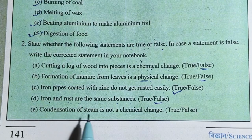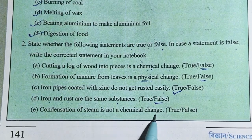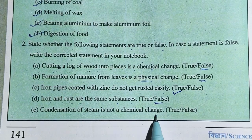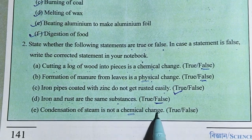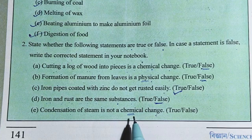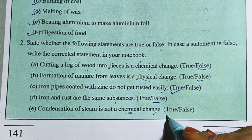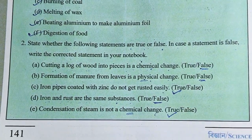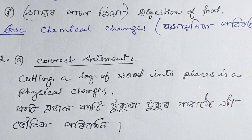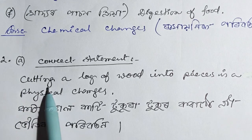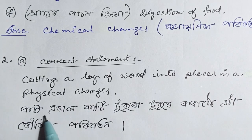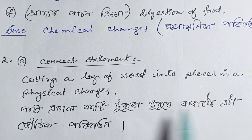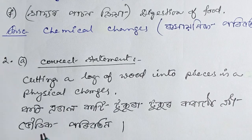Number E: Condensation of steam is not a chemical change — this is true. Number F: Cutting a log of wood into pieces is a physical change.